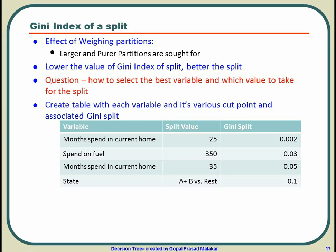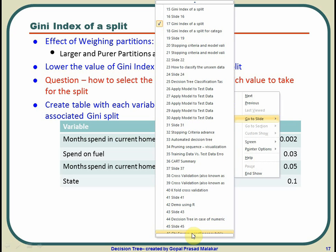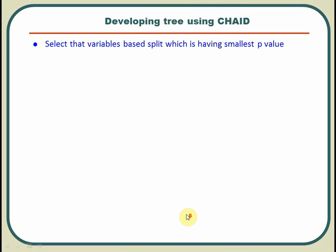In the case of the Gini method, we were taking each variable at different split points, taking the Gini index of a split, and sorting them in ascending order to get the best variable and best cut point. In CHAID, you do exactly the same thing — the only difference is that in place of the Gini index of a split, you get a p-value. You select the best split which has the smallest p-value.